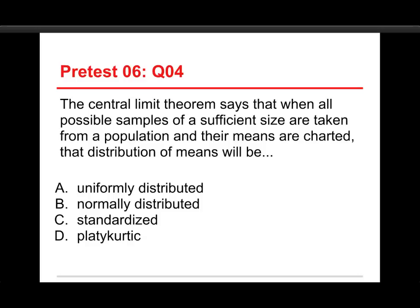Question number 4: the central limit theorem says that when all possible samples of a sufficient size are taken from a population and their means are charted, that distribution of means will be A, uniformly distributed; B, normally distributed; C, standardized; or D, platykurtic. The answer is normally distributed. Uniformly distributed means every answer is equally likely — that's not true; we're going to end up with a unimodal distribution. Standardized has to do with how the numbers are written across the bottom — standardizing a distribution doesn't change its shape. And platykurtic means it's relatively flat, drops off with very few outliers — that's just a different thing.